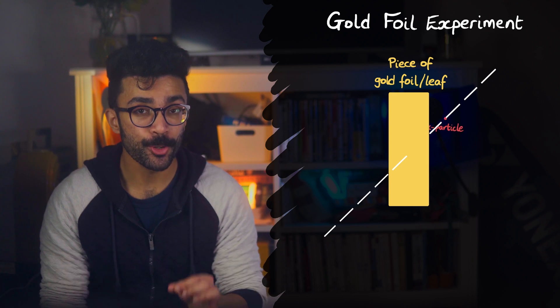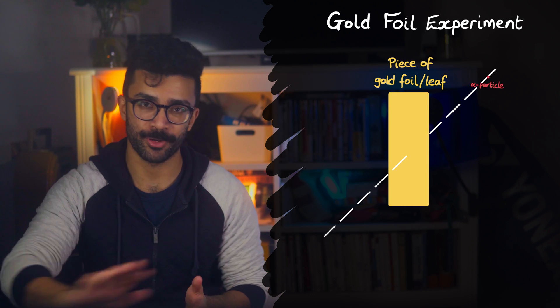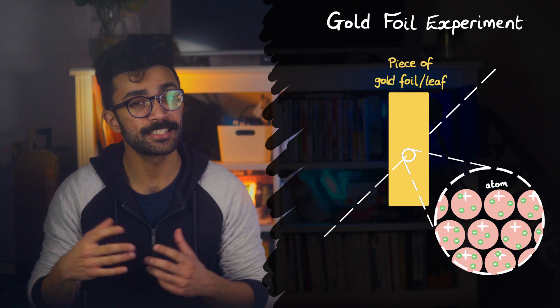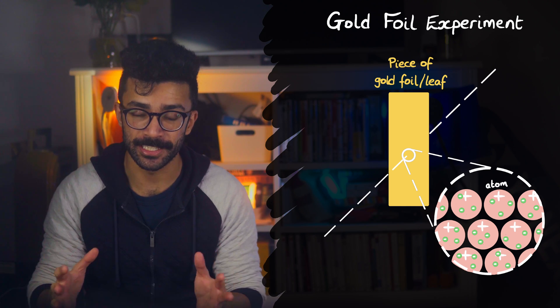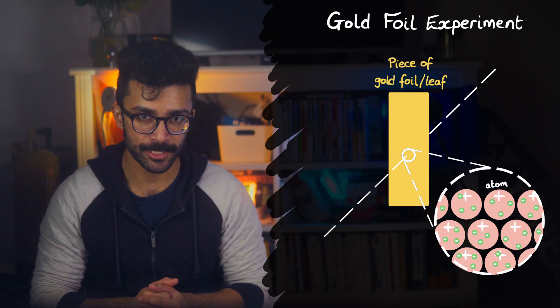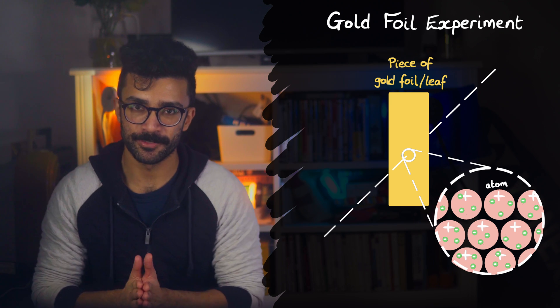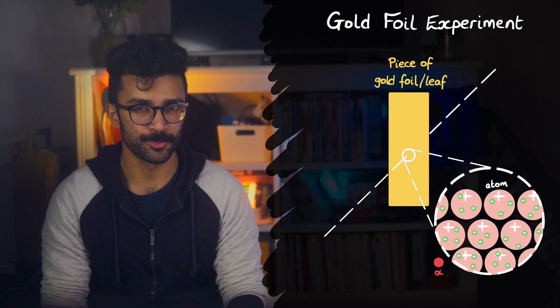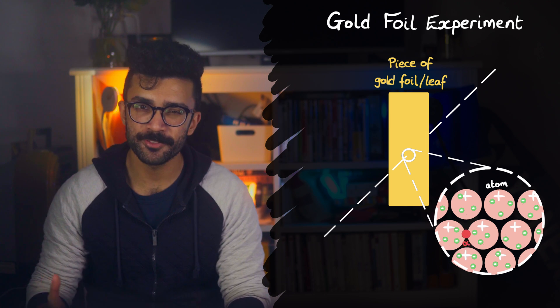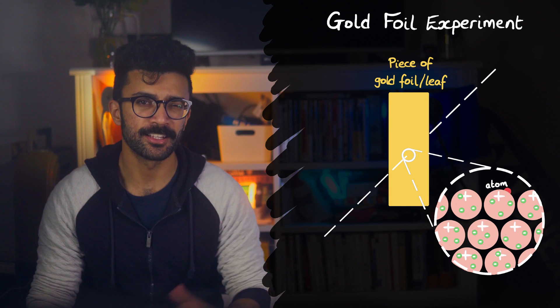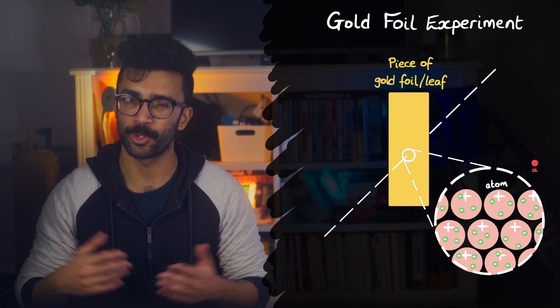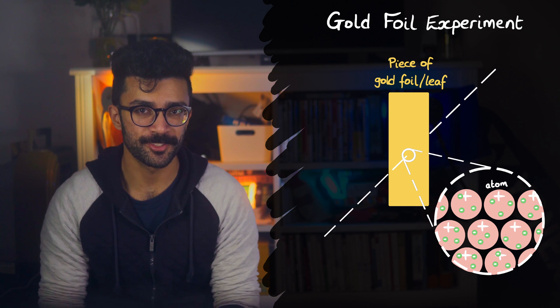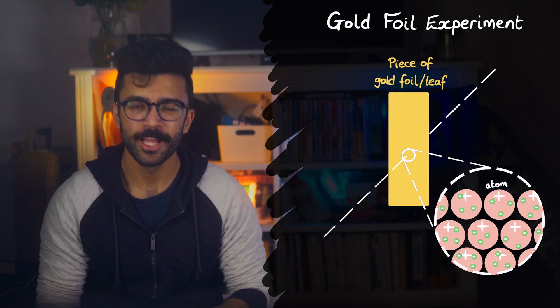Rutherford expected to see most alpha particles just passing straight through, because at the time scientists thought that atoms had negative charges spread out evenly throughout a weakly positive region, with the overall positive charge balancing the negative charges. So some alpha particles would be weakly repelled by the positive charge and weakly attracted by the negative charges, and so only be deflected by small amounts compared to how they went in.